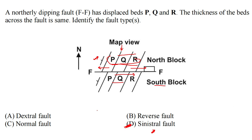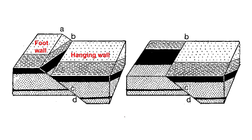Now if you want to find out another fault that could produce this pattern, we will see that with this figure. Here we can see it's a normal fault with a hanging wall and a footwall. Suppose this direction is north, so this should be the west direction. We can see that the beds are dipping generally towards the west and the fault is dipping northerly.